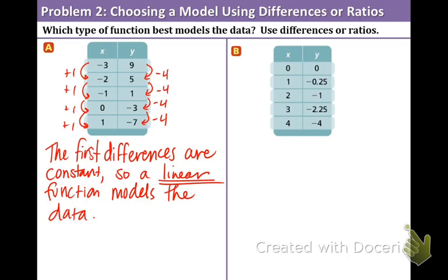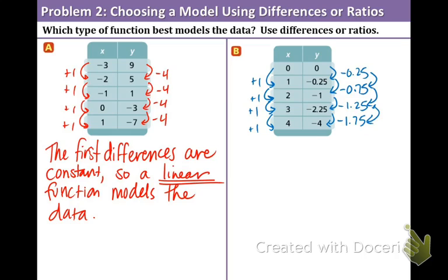In part B we have a different table. The x values are still going up by one. This time let's do the first differences and see if we get the same number. We find out that the first one is going down by .25. The next one is going down by .75, .125, and negative 1.75. When that happens you know the first differences are not the same so it cannot be linear. This cannot be exponential because we are not multiplying by the same number to get the next one. Now let's try the second differences. Each pair of numbers is going down by .5. So that means the second differences are constant. Therefore we have a quadratic function.